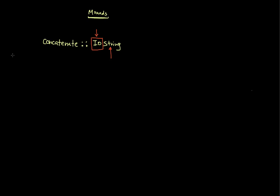Let's go ahead and complete our first approach of doing this problem. This is a very typical approach you may have seen in many introductory videos on monads and Haskell. I could define this using the do block, and within the do block I'm going to invoke the method getLine in Haskell. The getLine method in Haskell is defined as IO String.